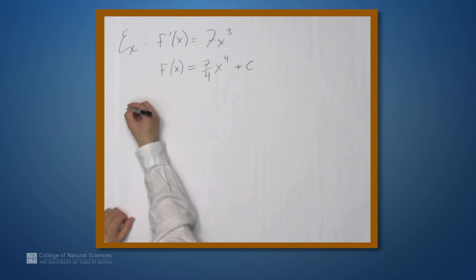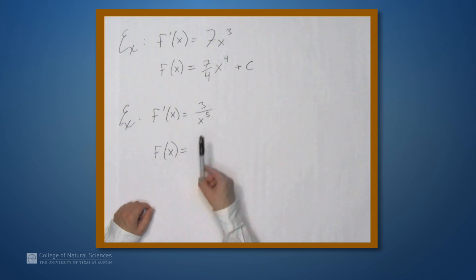Let's do one more example. Let's suppose now that f'(x) is 3 over x to the fifth. And we want to find f(x). Well, when we're finding antiderivatives, we generally want to do the same thing that we do when we're finding derivatives, which is rewrite an expression like this as 3 times x⁻⁵,